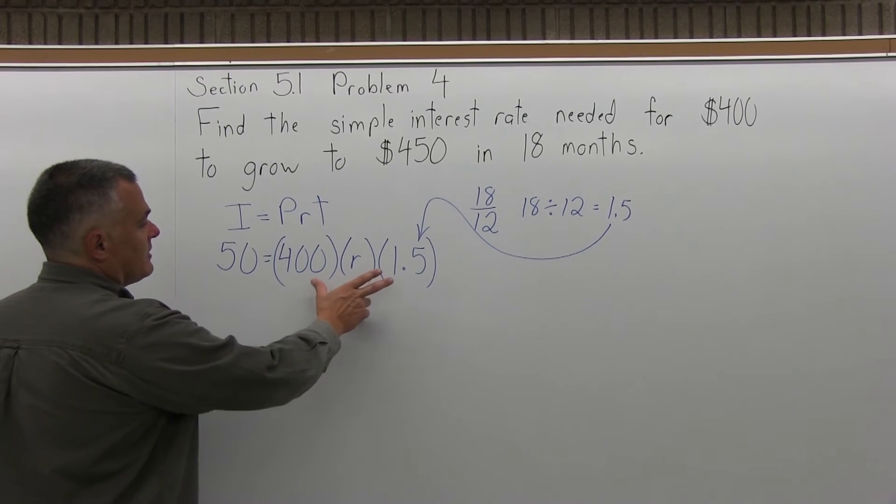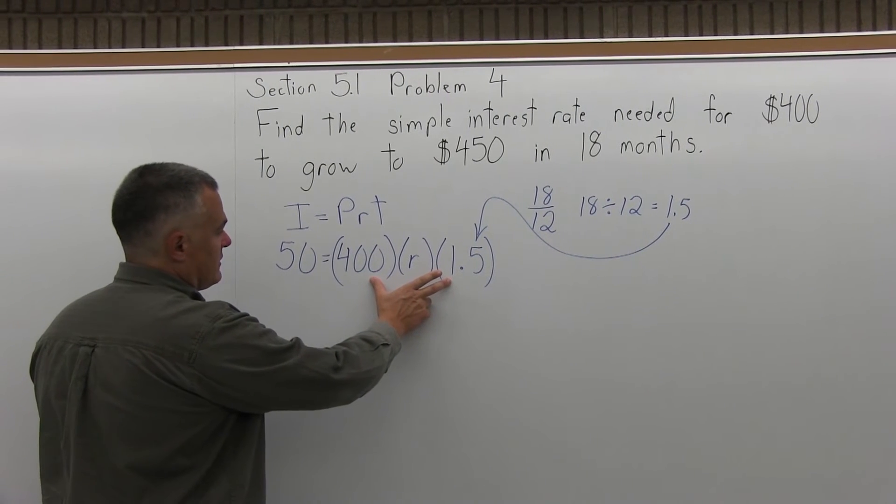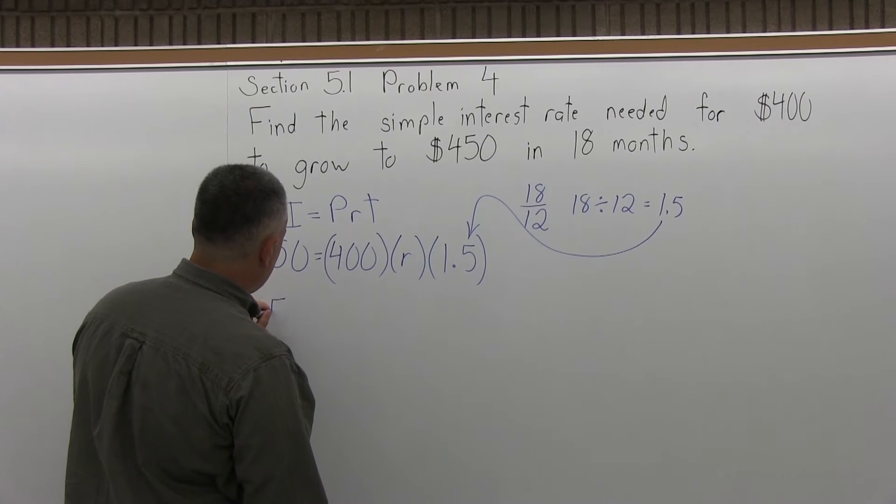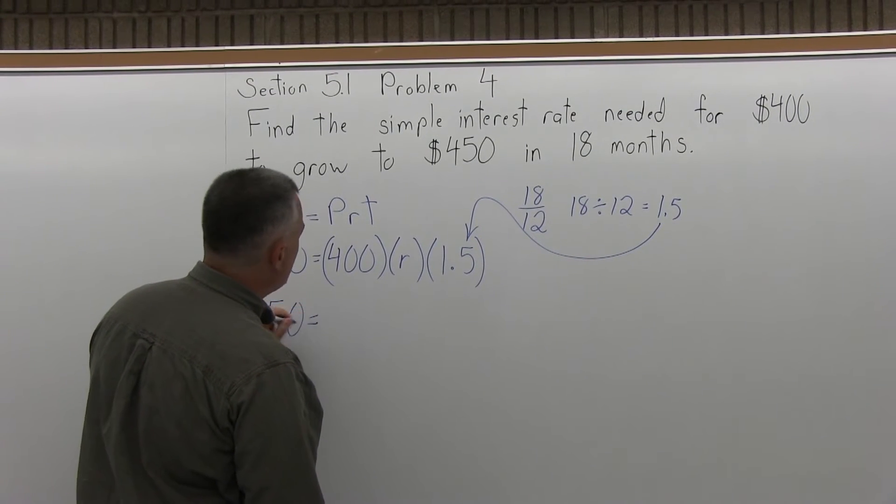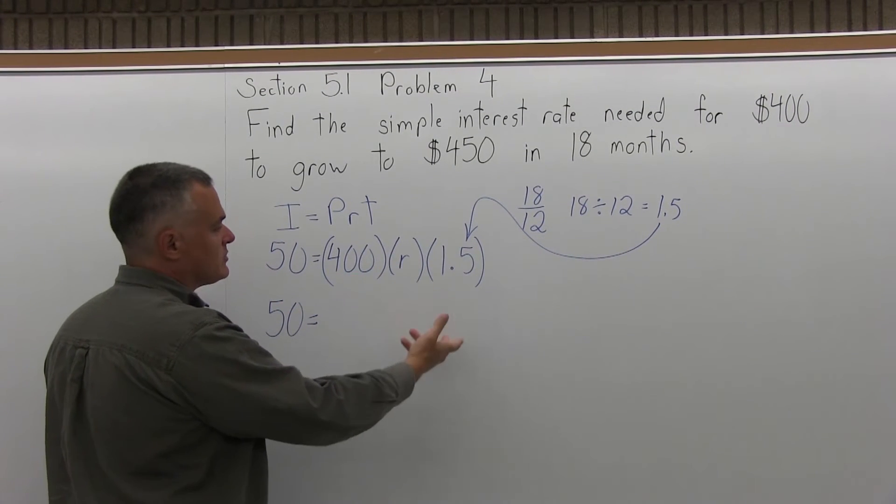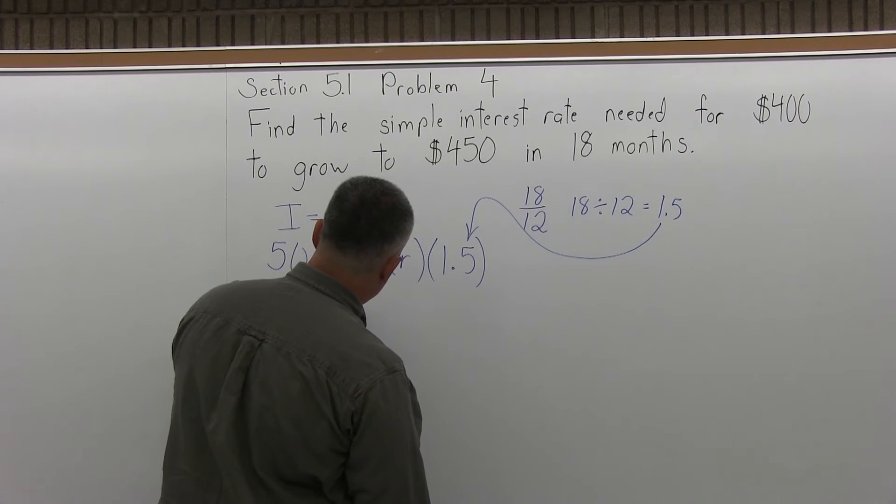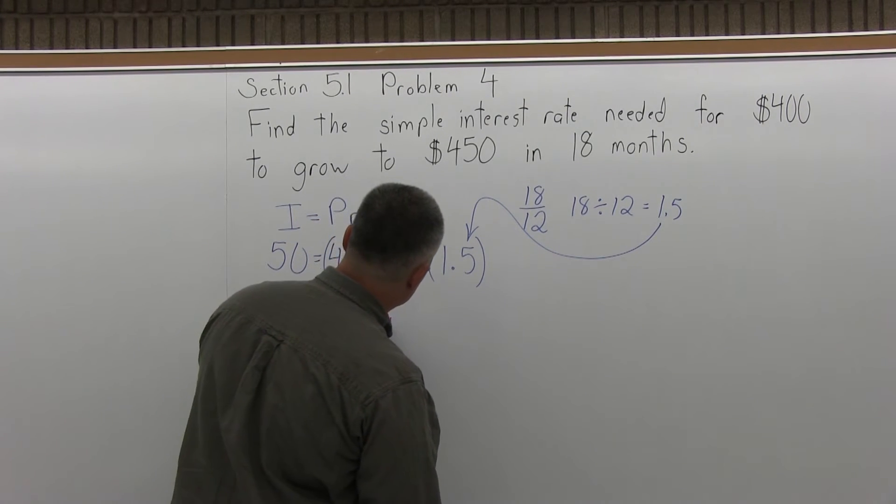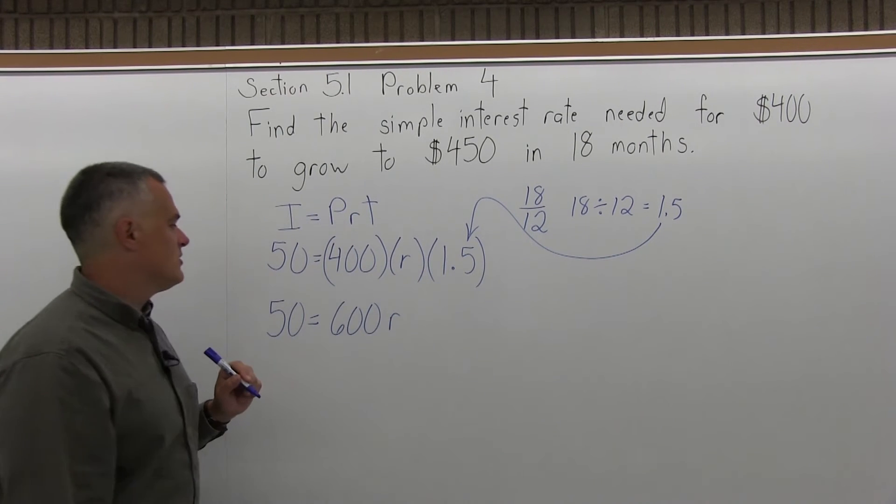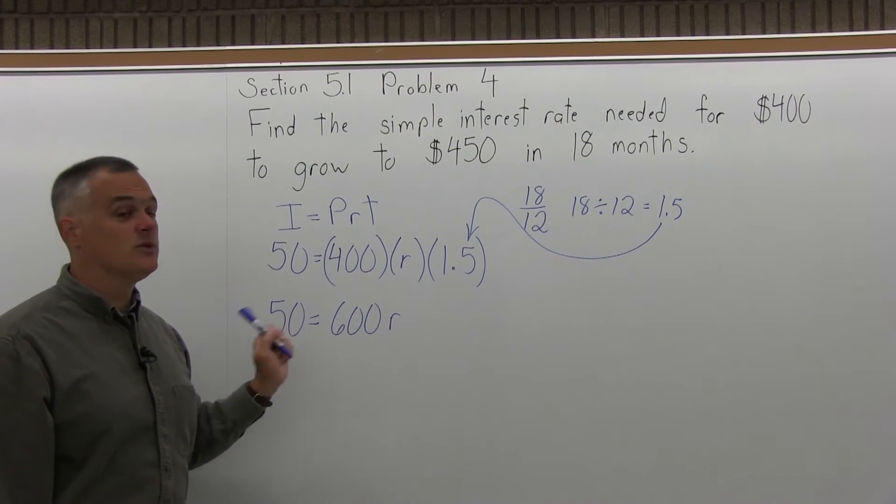Now, as you multiply the values on the right side of the equation, the left side is still 50 and on the right you have 400 times R times 1.5. Well the 400 times 1.5 you can do, and I happen to know that that's 600, and if you don't, the calculator will do it for you. So I have the equation 50 equals 600R.